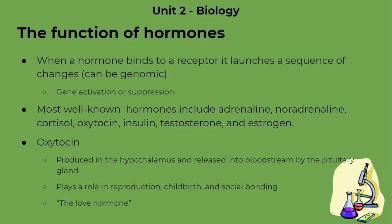Oxytocin is actually produced in the hypothalamus and is released into the bloodstream by the pituitary gland. It plays a role in reproduction, childbirth, and social bonding — especially in lactation and when released during kisses or hugs. As a result, it is also called the love hormone.